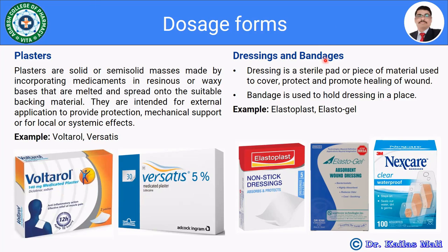Moving towards dressings and bandages: a dressing is a sterile pad or piece of material used to cover, protect, and promote healing of wounds. A bandage is used to hold the dressing in place. Examples include Elastoplast and Elastogel. Elastoplast is a non-stick dressing which absorbs and protects, while Elastogel is an absorbent wound dressing.